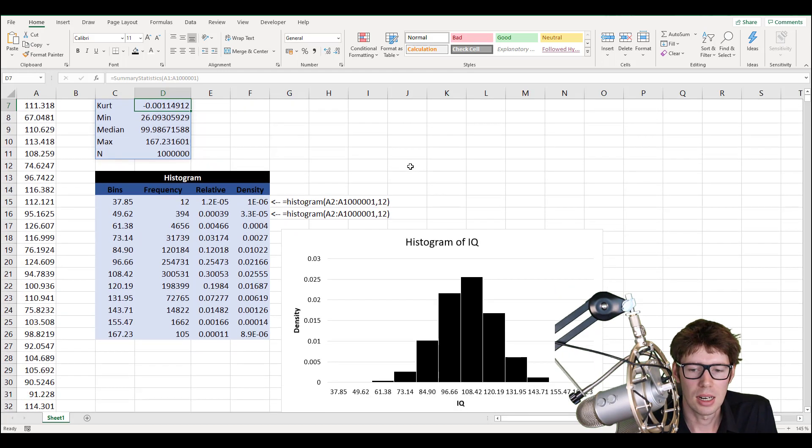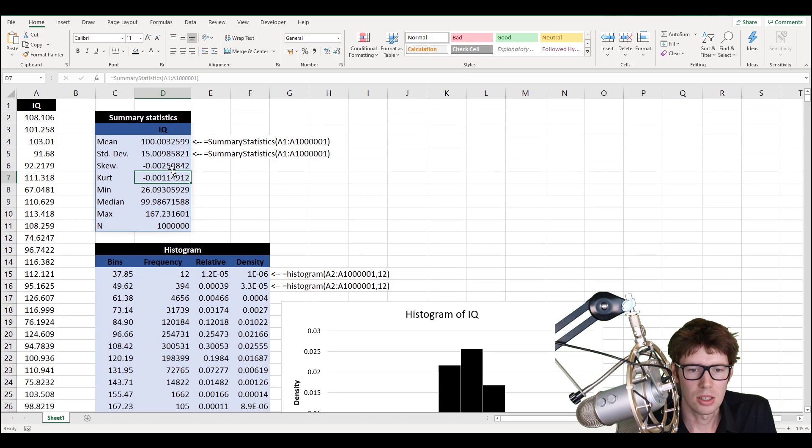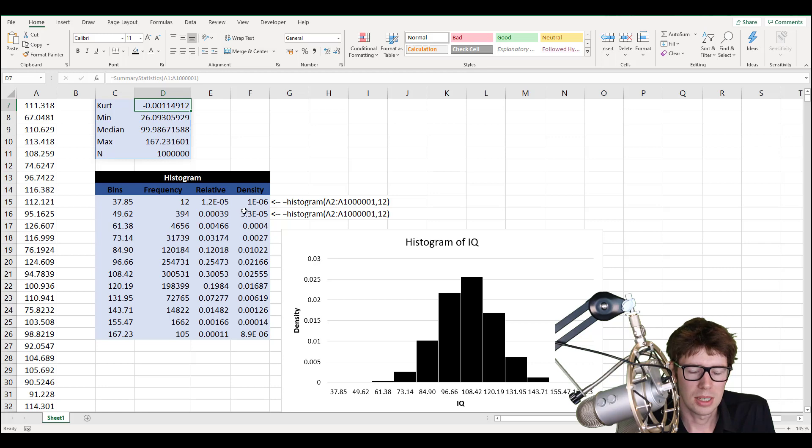And in addition here, I have drawn a histogram, which is also based on a VBA function that I have made. So as you can see here, the summary statistics table came from summary statistics. That's not a function in native or vanilla Excel. I'm going to show you the code in a second here. And the histogram is here generated by another VBA function I have written.